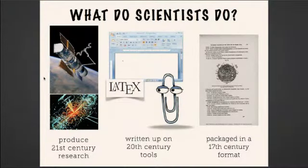Before I talk about the future of the article, I want to blast from the past and look at the past of the article. In order to understand how we're moving towards the future, I think it's important to look at how things were being done 400 years ago. So the slide I normally start my presentations with asks: what do scientists do today? We produce 21st century research — science is innovative, original, and cutting edge. But when it comes to writing up science, the tools and technologies we use were built and designed in the past century — 1980s products, from LaTeX to Word. These tools were intended for single use — one person working at a mostly offline computer. They were not built for collaboration, and they were not built for the web.